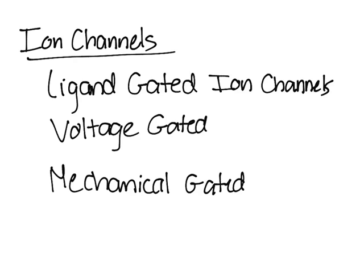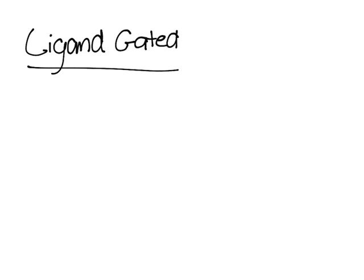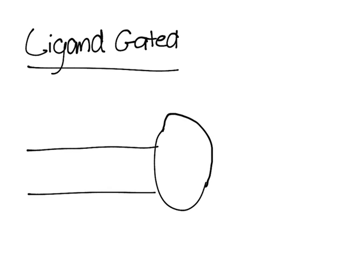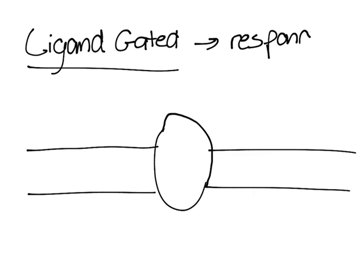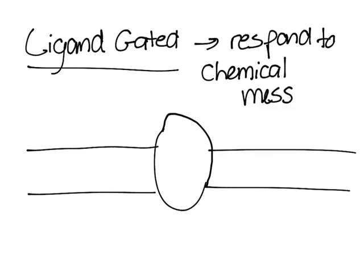First, let's start with ligand gated ion channels. These are channels - that's the membrane and that's the channel - and these respond to chemical messengers.